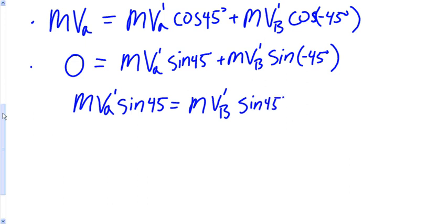So, you'll notice that the masses cancel out, the sines cancel out, and that we find V A prime equals V B prime.